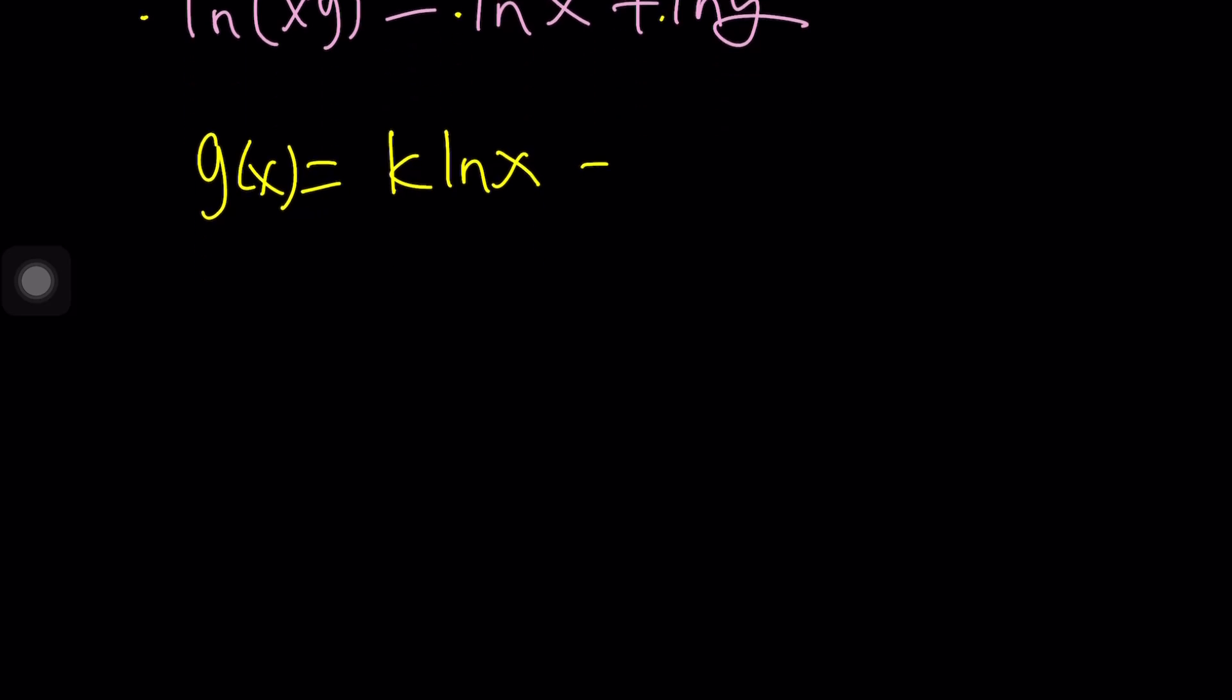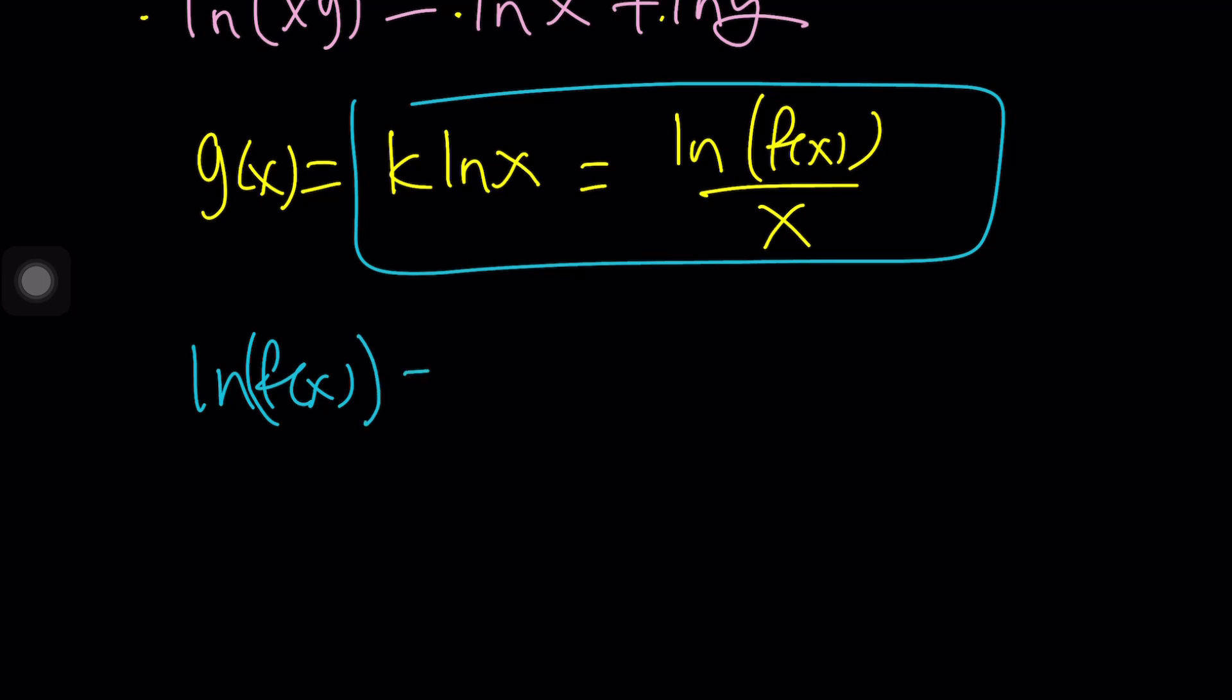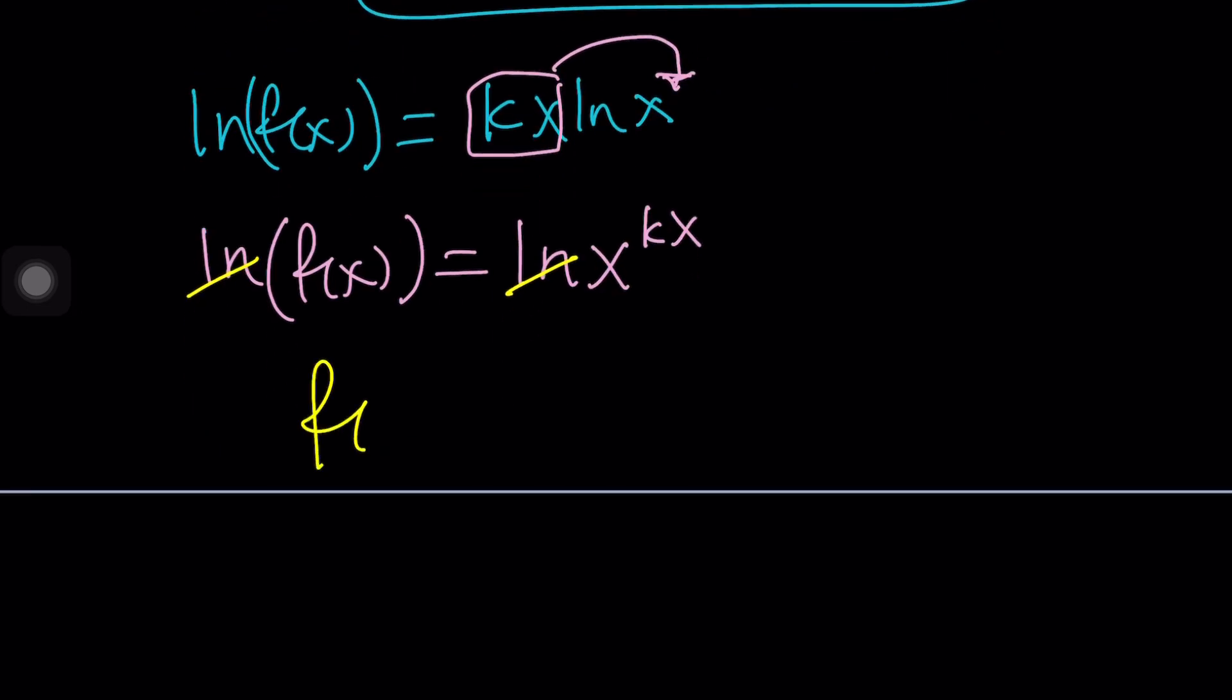But what is g of x? It's ln f of x divided by x. From here, we get a beautiful equation. Let's go ahead and work it out. So, this gives us ln f of x. If you do the cross multiplication, you get k x ln x. And now, we can go ahead and move this up as a power. That gives us ln f of x. And why do we do that? Because we want to end up with ln equals ln. Make sense? So, now, this gives us ln x to the power kx. Now, you can do e to the power of both sides and totally forget about the lns. And from here, we get f of x equals x to the power kx.